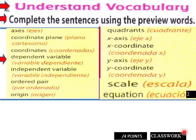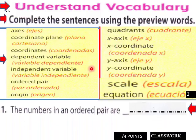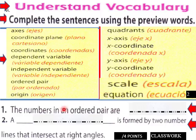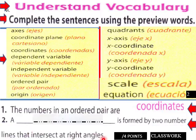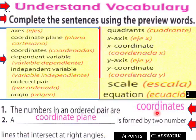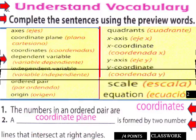This is really important. The numbers in an ordered pair are called coordinates. A coordinate plane is formed by two number lines that intersect at right angles. Coordinates are the numbers in an ordered pair. A coordinate plane is formed by two number lines that intersect at right angles.